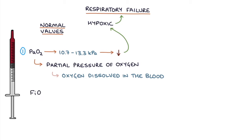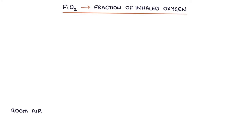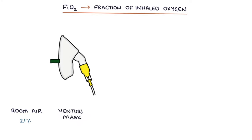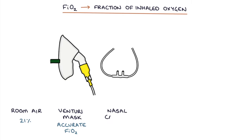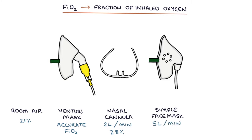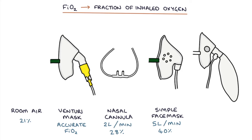You also need to check the FiO2, which is the fraction of inhaled oxygen. Room air has an FiO2 of 21%, meaning the concentration of oxygen in room air is 21%. Venturi masks can be used to accurately control the FiO2. Other masks only give an approximate FiO2: nasal cannula at 2 L/min gives approximately 28%, a simple face mask at 5 L/min gives approximately 40%, and a non-rebreather mask at 10 L/min gives approximately 95%.